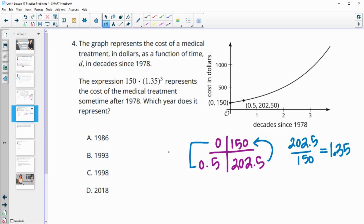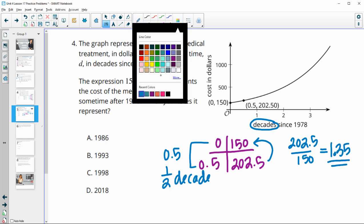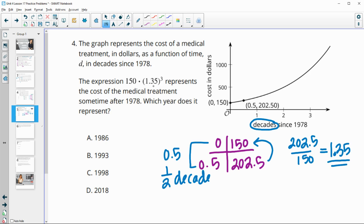So for an interval of 0.5 or half of a decade, because remember that our X values are in decades, so half of a decade, every half decade has a growth rate of 1.35. So in this case, then that matches our growth rate here. We've had three of these intervals.